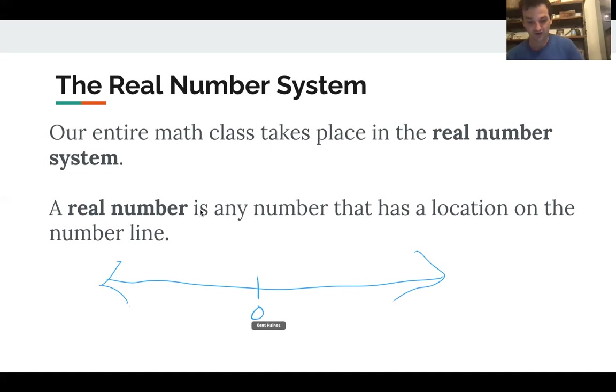Of course, you know, zero, one, two, all the way down to seven, ten, a billion, a trillion, all the negative numbers, negative one, that sort of thing. And of course, every little number in between all those whole numbers. Every number in here, it's a location on the number line. It's a real number.